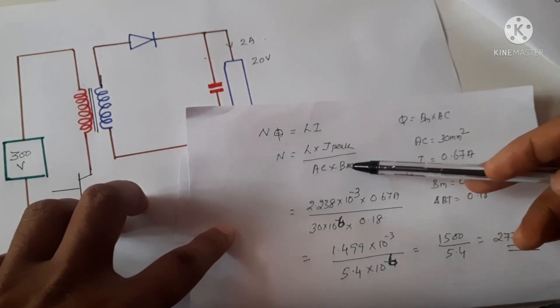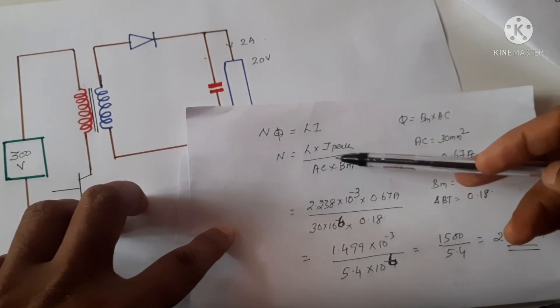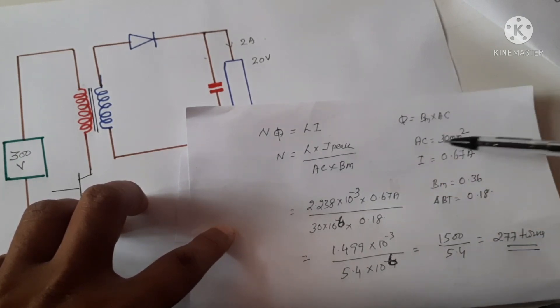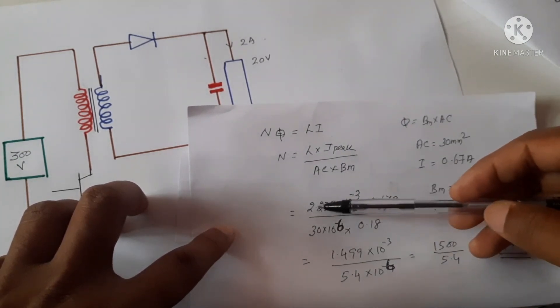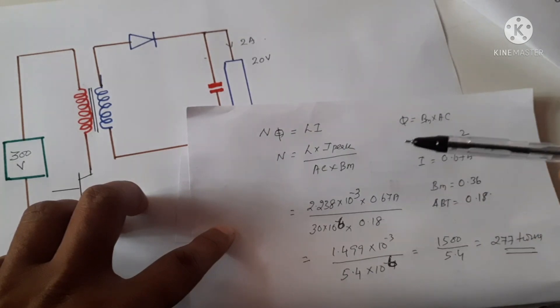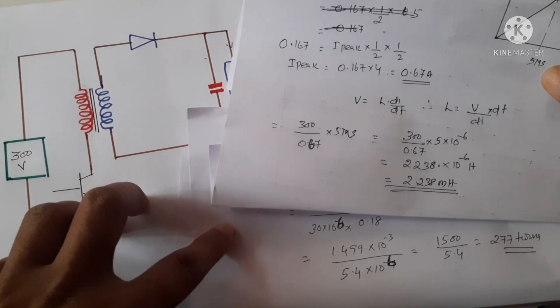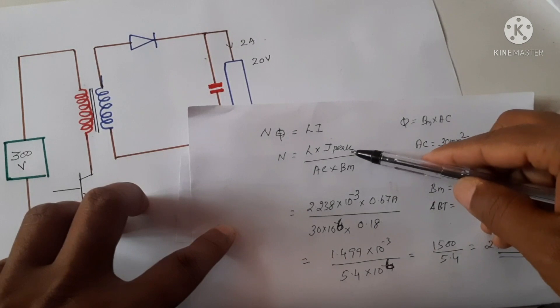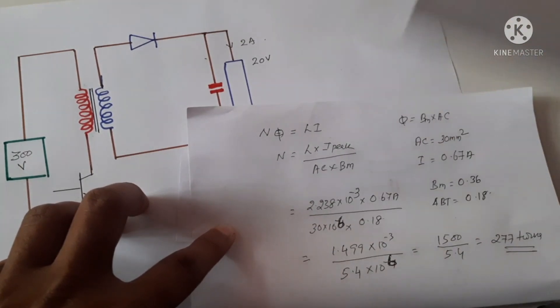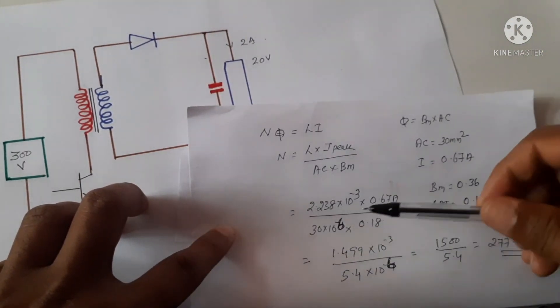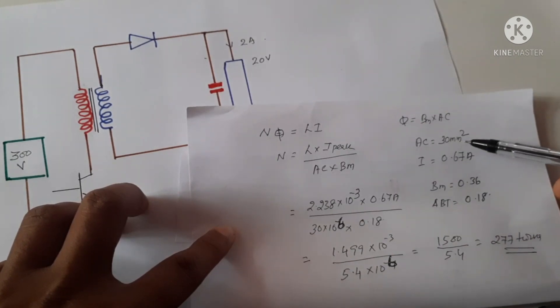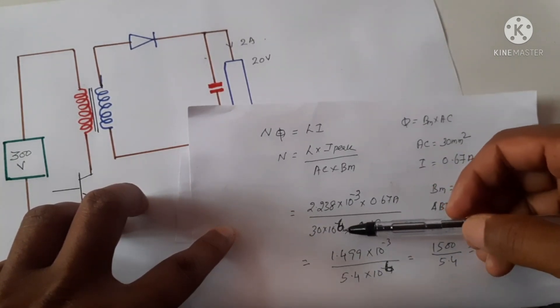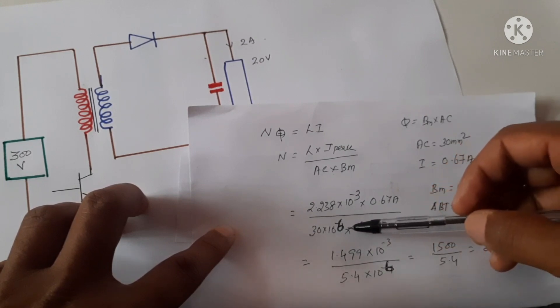That means the flux that the material can carry into the area. If we assume the area is 30 mm squared. Now if we put all these values, inductance value as we already calculated as 2.238 millihenry, and the peak current is 0.67 amperes, and this mm squared is converted to meters squared, then we will get this value.